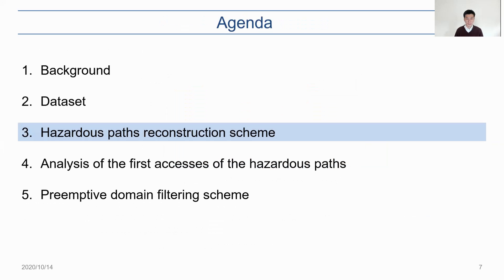Now that we have the dataset, as a first step to analyze the web access records, we reconstructed hazardous paths, which are the paths to malicious URLs. Next, I would like to explain our hazardous path reconstruction scheme.